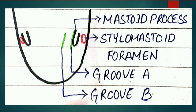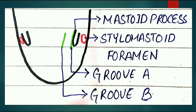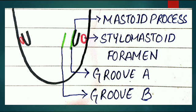Now we will study the mastoid process and the stylomastoid foramen. This is your mastoid process, and the stylomastoid foramen lies behind the mastoid process. An interesting fact: the mastoid process is not projected in the fetal skull - it first appears in the second year of life. Because of this, the stylomastoid foramen is more exposed in the fetal skull, giving a higher chance of injury to the seventh cranial nerve (facial nerve) in children.